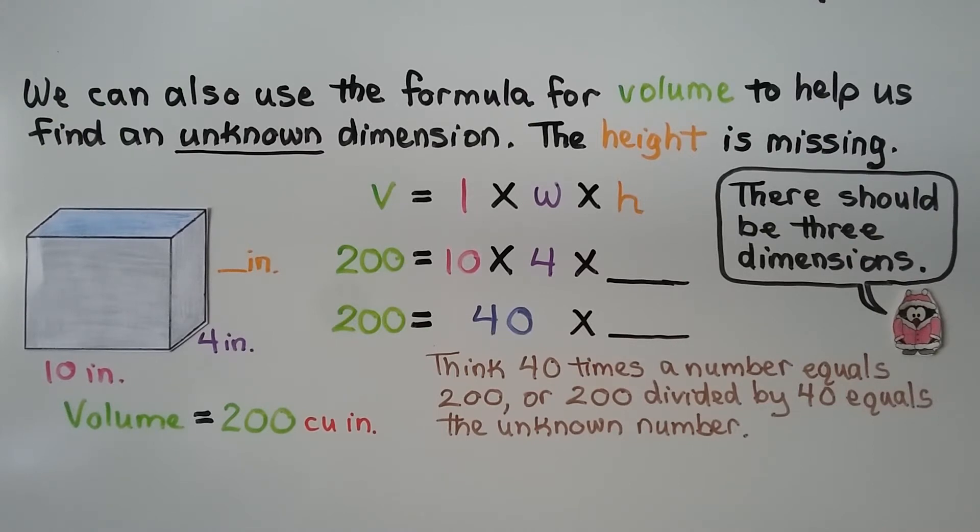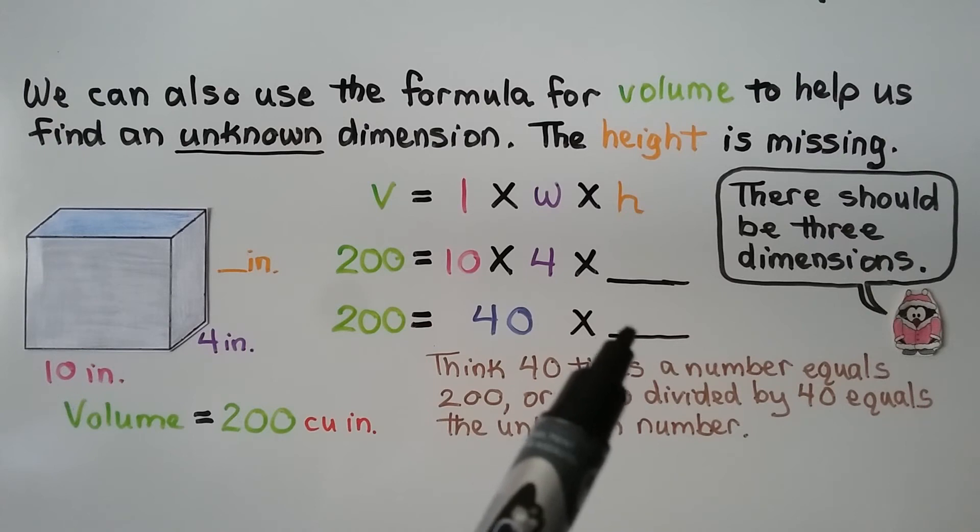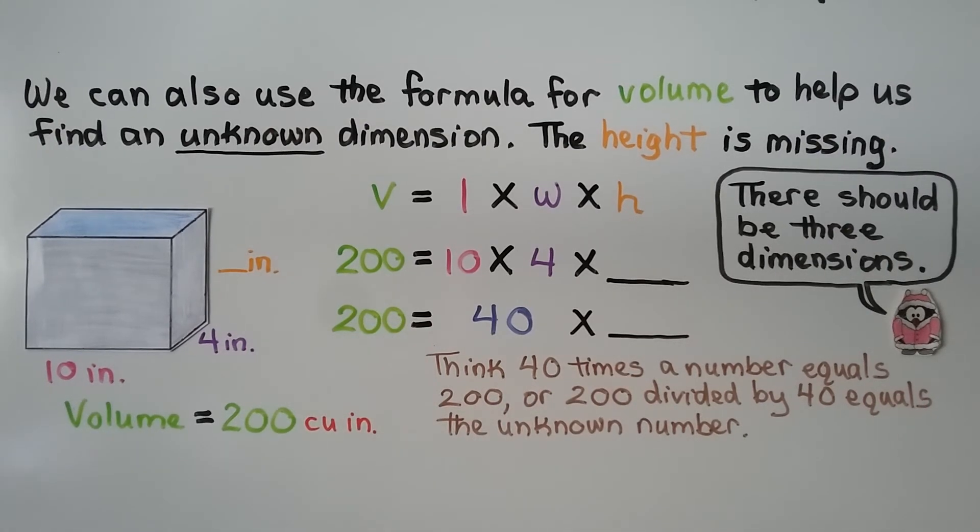We can also use the formula for volume to help us find an unknown dimension. Here, the height is missing. There should be three dimensions. We have our length, we have our width, but we don't have the height. But it is telling us that the volume equals 200 cubic inches. We do length times width, which is 10 times 4. That's going to give us 40. So 40 times some number height is going to equal 200. We think 40 times a number equals 200. Or, we can use the inverse, 200 divided by 40 equals the unknown number.